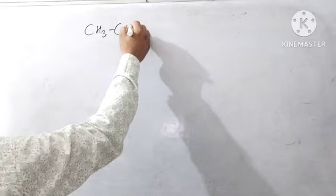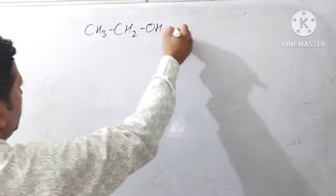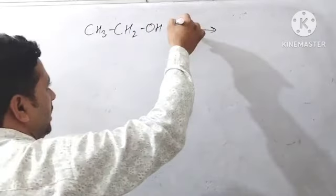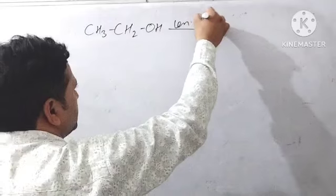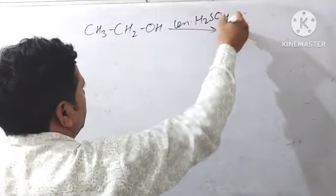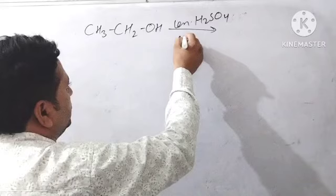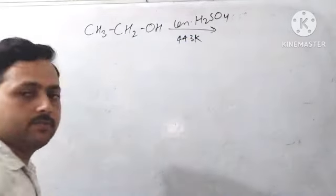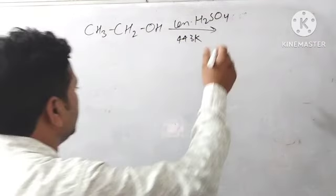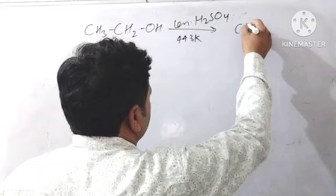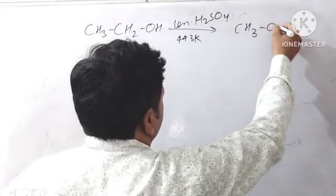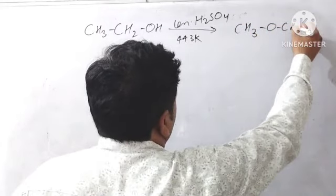Let us see what is happening and how it is happening. What we have discussed here is alcohol, ethyl alcohol I am taking here with concentrated H2SO4 at temperature 443 Kelvin. At this temperature we get ether: CH3-CH2-O-CH2-CH3.